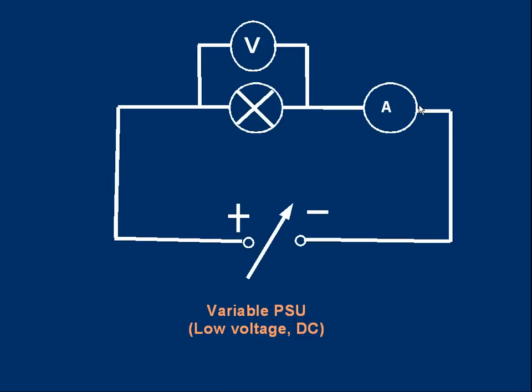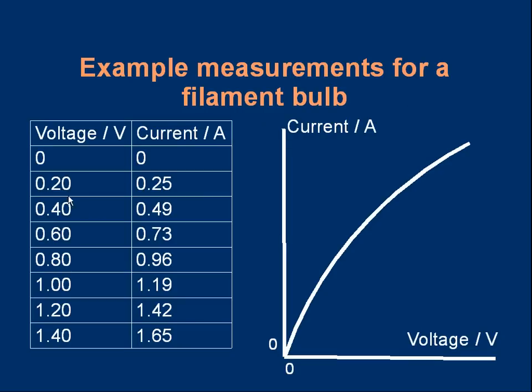I can build up a table of results. This would be fairly typical. Notice how I've done the headings which follow the SI system, international format: quantity, divide sign, slash, unit. Here's the table, for example when the voltage was 1.00 volts the current was 1.19 amps. I can turn the table into a graph, plotting current on the y-axis, voltage on the x-axis.